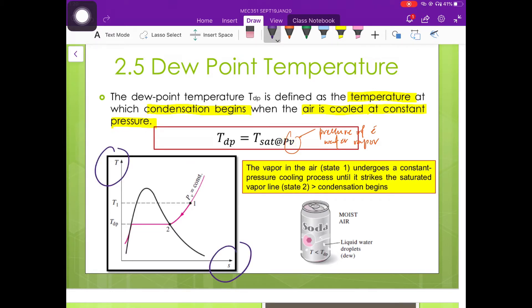Let's have a look at this T-S diagram. This curve representing constant pressure. The vapor in the air at state 1 will undergo a constant pressure cooling process until it reaches the saturated vapor line at state 2, and condensation will begin if the cooling process is further occur.